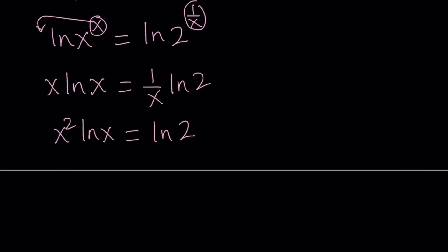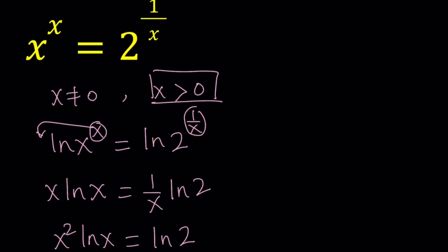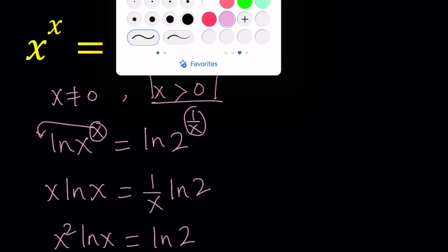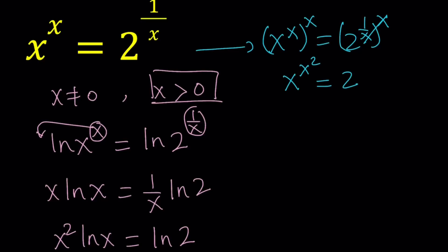This is kind of nice because we have all the x's on one side and the constants on the other side. We could also get the same result if we raised both sides to the power x first. That would give us x to the power x to the power x equals 2 to the power 1 over x to the power x. Since x is positive, x cancels out — x's are multiplied — so x to the power x squared equals 2. That's another approach, but eventually you get the same thing.